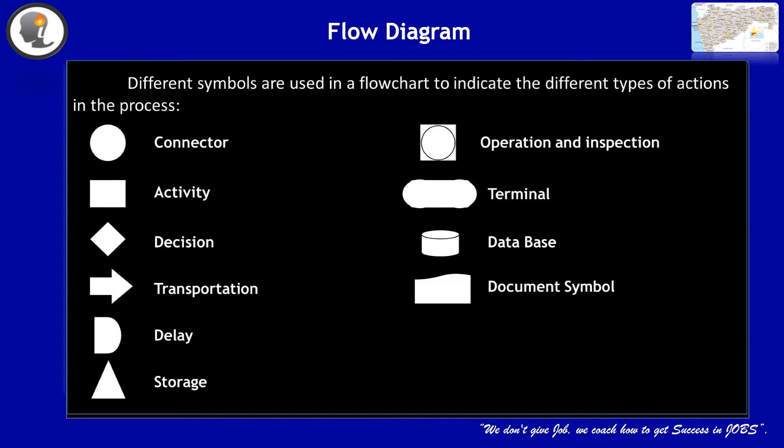Square and circle together indicates operation and inspection. Next is the terminal symbol. Next are the database and document symbols. These are all the symbols used in flow chart diagrams.